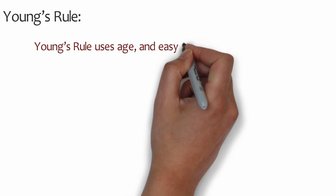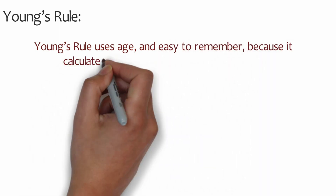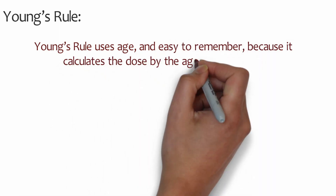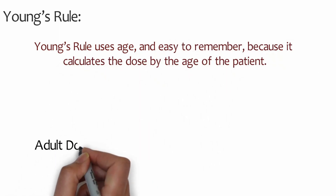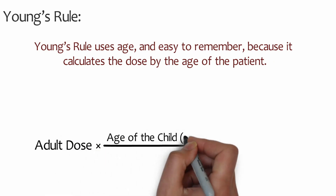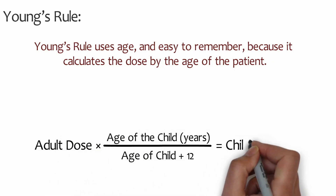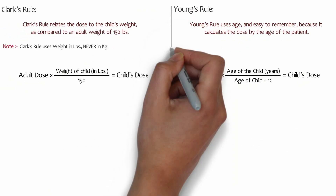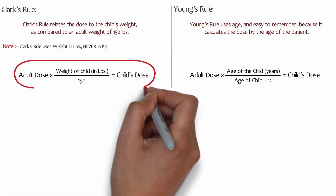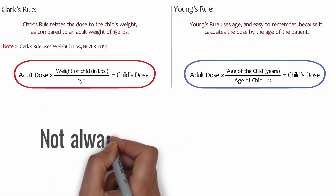Young's Rule: Young's Rule uses age, and is easy to remember because it calculates the dose by the age of the patient. The formula is: adult dose times age of the child in years, divided by age of the child plus 12, equals child's dose.